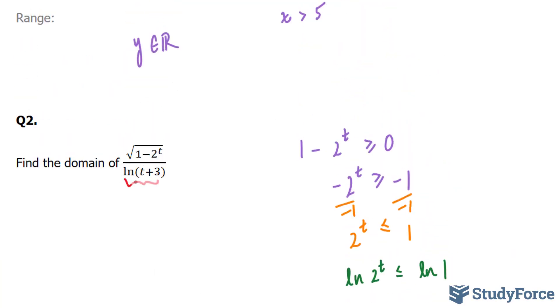For our next restriction, we'll focus on the denominator. And we know that the denominator cannot equal 0. So we're going to set ln(t + 3) cannot equal 0.